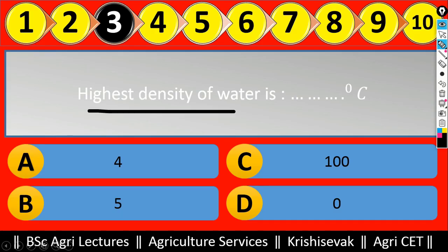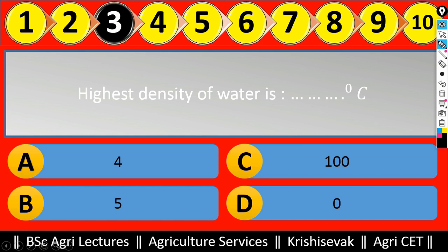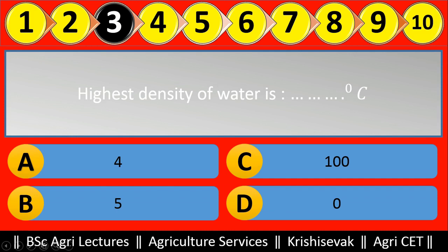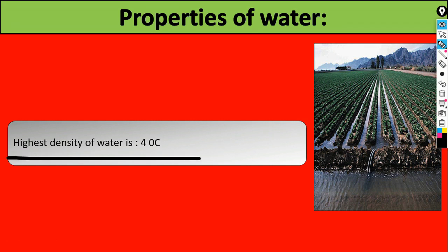Question number three: 'Highest density of water is at ______ degree Celsius.' Options are: A) four, B) five, C) hundred, and D) zero. The right answer is four — highest density of water is at four degree Celsius.